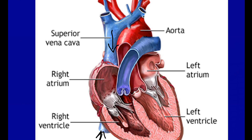Those veins dump blood right into the right atrium, which receives unoxygenated blood. It then sends that unoxygenated blood down through the tricuspid valve — named because it has three cusps — on the right side of the heart. Blood ejects from the right atrium and goes into the right ventricle.